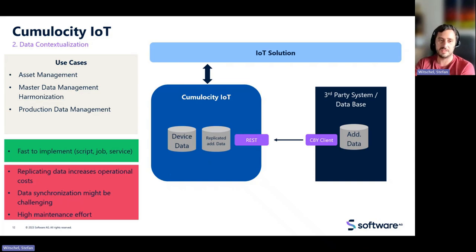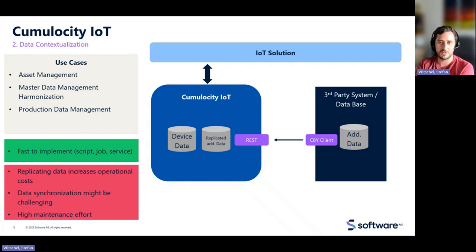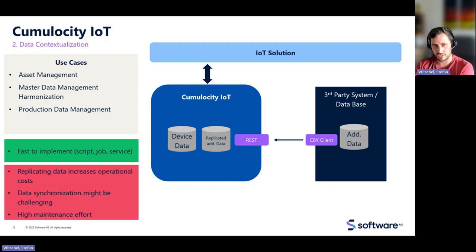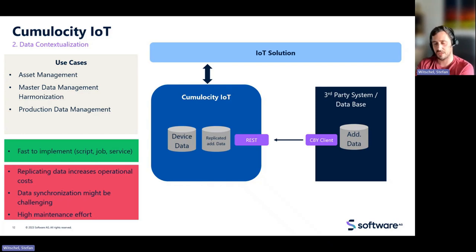The pro of data contextualization is it's most likely preferred at the beginning of a project because it's fast and easy to implement — the most obvious approach. A small Python script, agent, or job can synchronize data and put it to Cumulocity. But in production, this can get more complicated. For use cases like asset management, master data management, harmonization, or production data management, you can also implement other data integration options. This is a valid option, but you should also consider other options I'll show you.